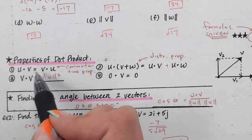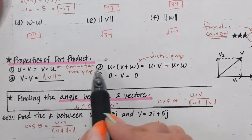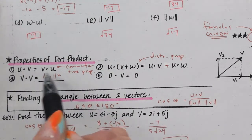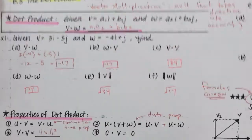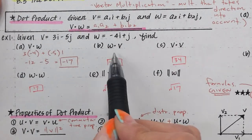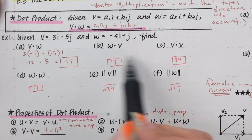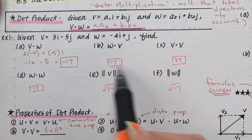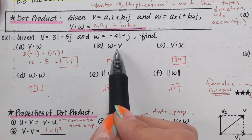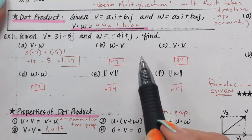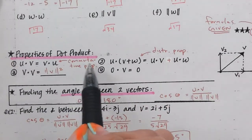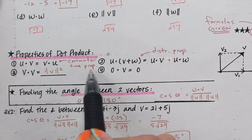The first property is the commutative property. It just means that we can multiply either way, just like we did with A and B. You'll see that these are the same answers no matter which way you multiply them — that's called the commutative property.